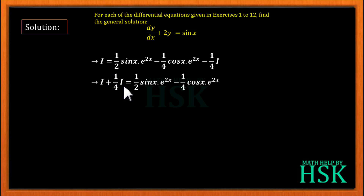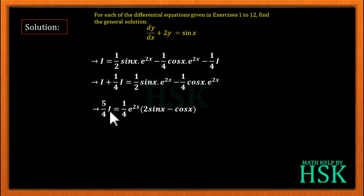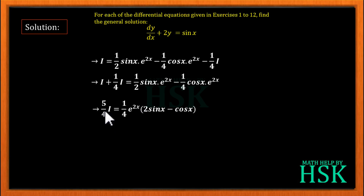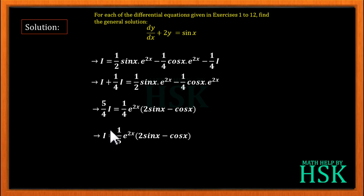Collecting terms, we get 1 + (1/4)·I on the left, which simplifies to (5/4)·I. Taking e^(2x) common and simplifying, the right-hand side becomes (1/4)·e^(2x)·(2 sin x − cos x). The 4 and 4 cancel, so I = (1/5)·e^(2x)·(2 sin x − cos x).